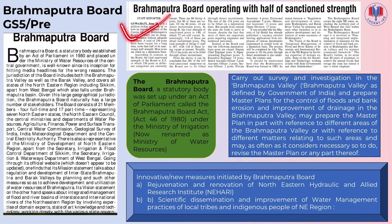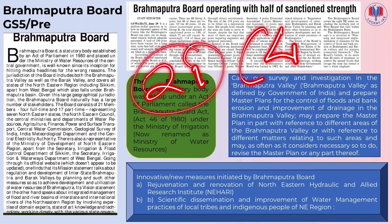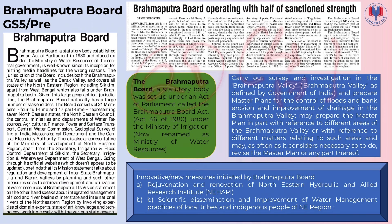Later, that ministry was reconstituted as the Ministry of Water Resources. The board operates with a sanctioned strength of 21 members — 4 full-time members and 17 part-time members. These include representatives from Water Resources, Agriculture, Finance, Power, Central Water Commission, Indian Meteorological Organization, and Geological Survey.